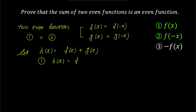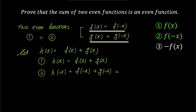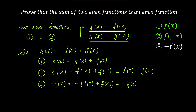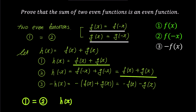For representation 1, h(x) is f(x) plus g(x). For representation 2, substituting minus x: h of negative x is f of negative x plus g of negative x. Using the properties of f(x) and g(x), this becomes f(x) plus g(x). For representation 3, negative h(x) is minus f(x) plus g(x), which expands to negative f(x) minus g(x). Comparing 1, 2, and 3, representations 1 and 2 are the same in form. Therefore, the sum of two even functions h(x) is an even function.